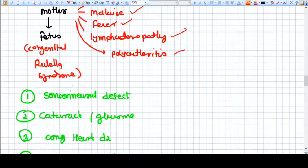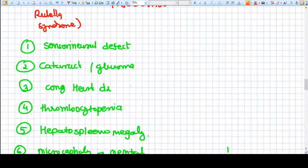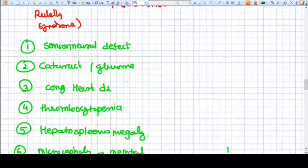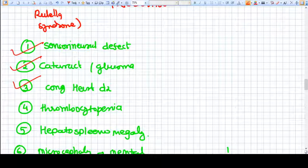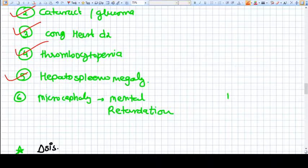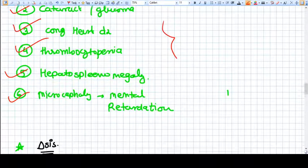And the fetus gets the congenital rubella syndrome. What happens in congenital rubella syndrome? Almost every system of the body is affected, but the most commonly affected is the neural system. So sensory neural defect, cataract, glaucoma, congenital heart disease, thrombocytopenia, hepatosplenomegaly, microcephaly, mental retardation. All these things are associated with congenital rubella syndrome.